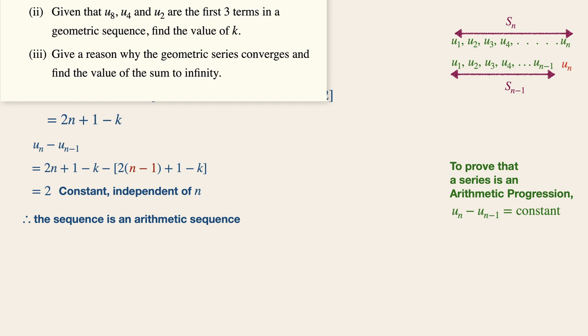Now since the nth term is denoted by this expression, the eighth term is then obtained by substituting n equals to 8 into the expression, so on and so forth for the fourth and second terms. Now since u8, u4, and u2 are three consecutive terms of a geometric sequence,